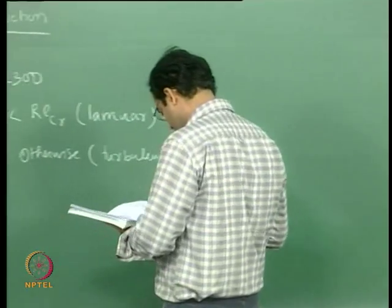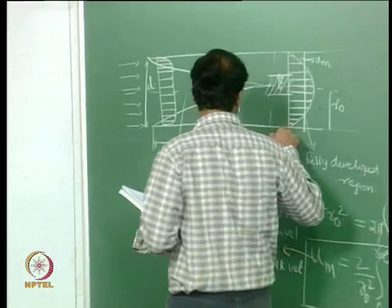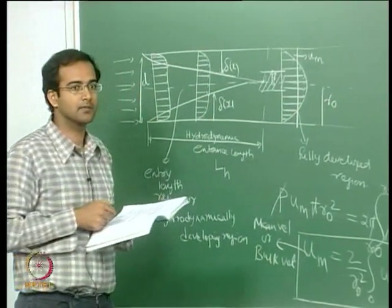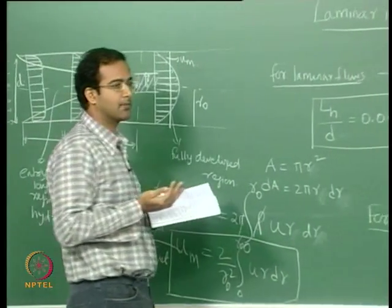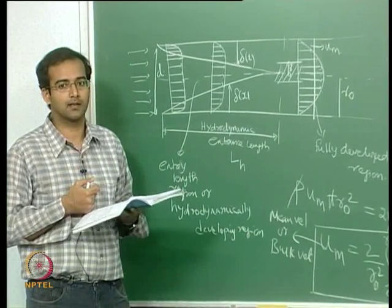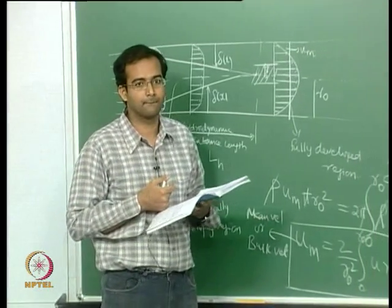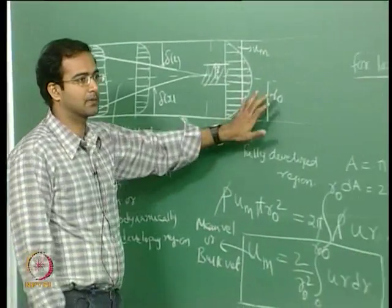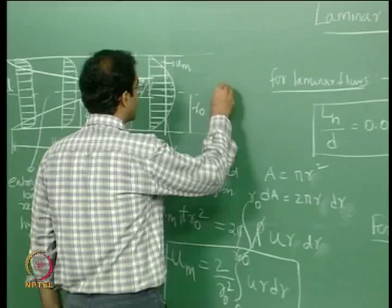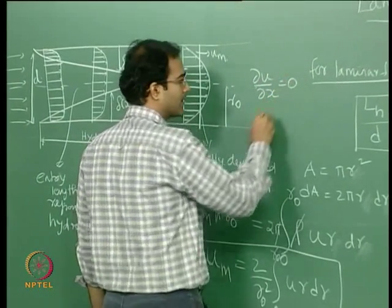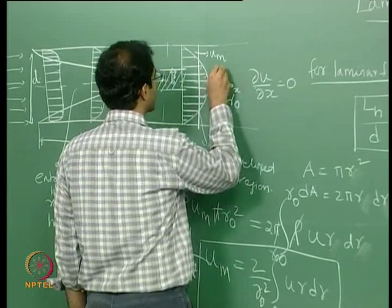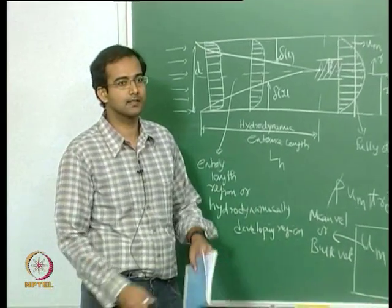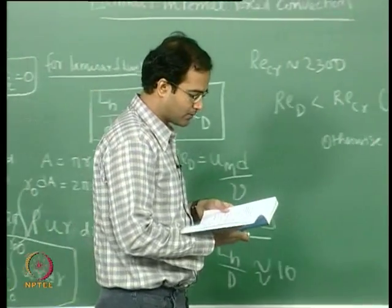To mathematically determine that the flow is fully developed, we need a rigorous criterion. Looking at velocity profiles plotted downstream, they all appear very similar. The mathematical criterion for hydrodynamic fully developed flow is: ∂u/∂x = 0, meaning the velocity gradient with respect to the axial direction x equals zero. This clearly tells us we are in the fully developed region.